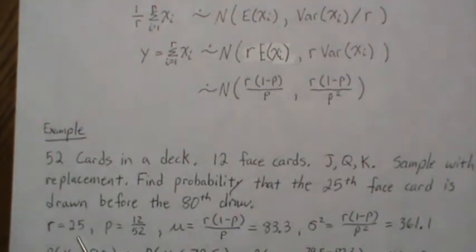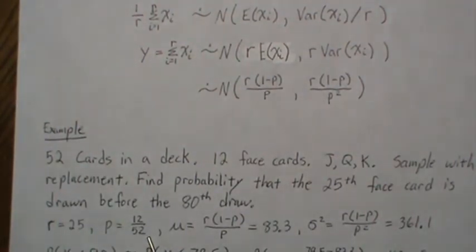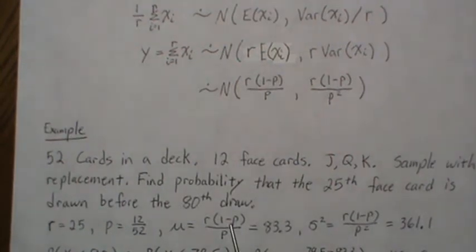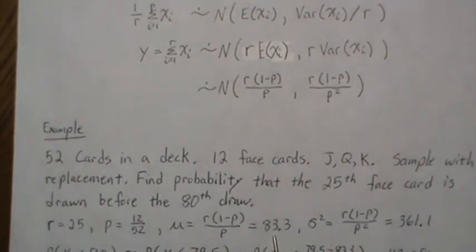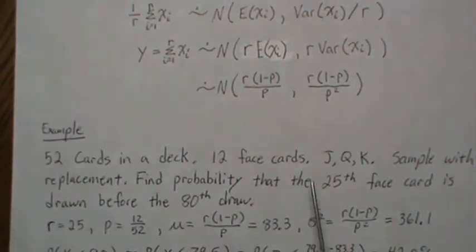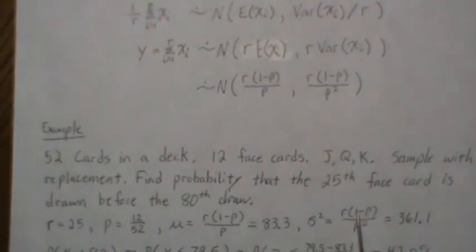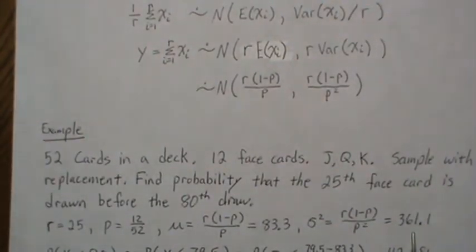So r is 25, p is 12 over 52. The mean, when you plug these in, is 83.3. The variance, when you plug in the numbers, is 361.1.